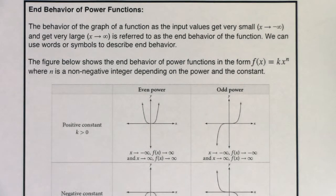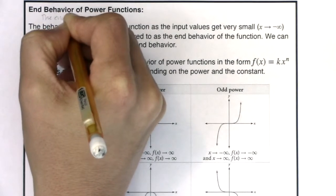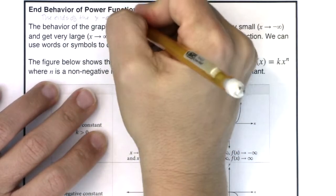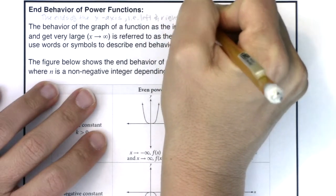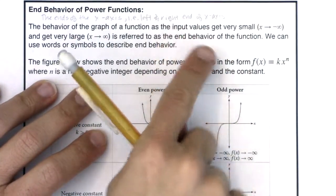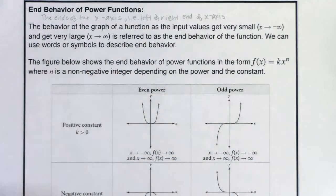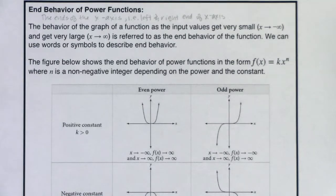Hey Math 31, welcome back to this section on end behavior of power functions. When we say end behavior, we're talking about the ends of the x-axis — heading left and right. As we go left and right, we're curious about what the y-values are doing. We've talked about moving left and right for domains, and up and down for range — end behavior combines those ideas.